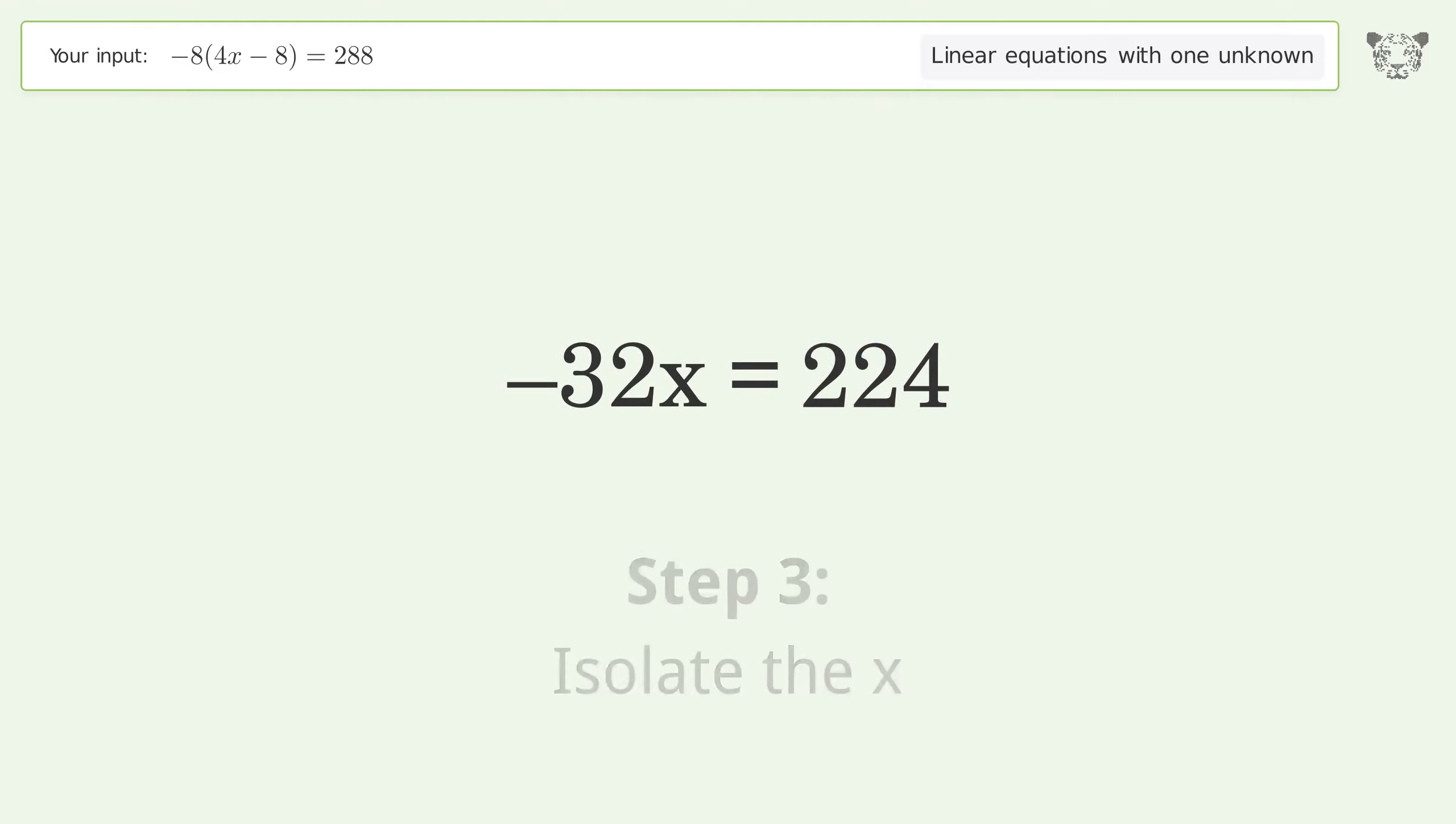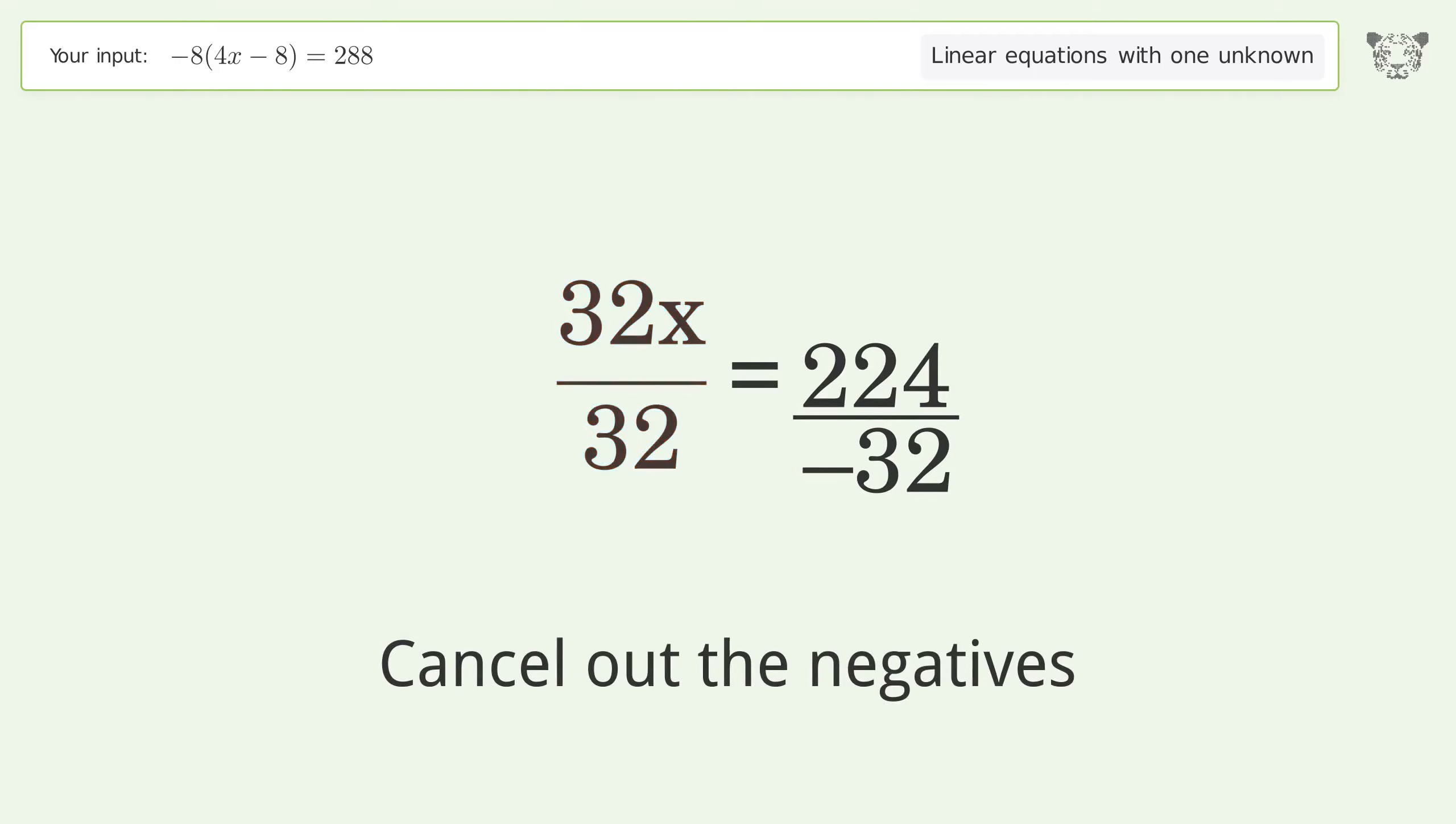Isolate the x. Divide both sides by negative 32. Cancel out the negatives. Simplify the fraction.